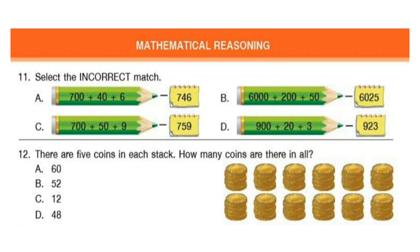Question 12. There are 5 coins in each stack. How many coins are there in all? Count the number of stacks and then multiply by 5. The answer is option A: 60.